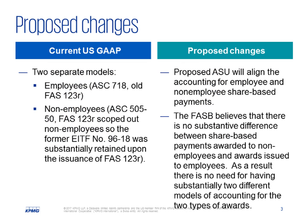Yes, absolutely, Ryan. Currently under US GAAP, there are actually two different accounting models: one for non-employees under ASC 505-50, formerly EITF 96-18, and one for employees, ASC 718, which is formerly FAS 123R. Under the proposed ASU, the FASB is looking to substantially replace ASC 505-50 with ASC 718.